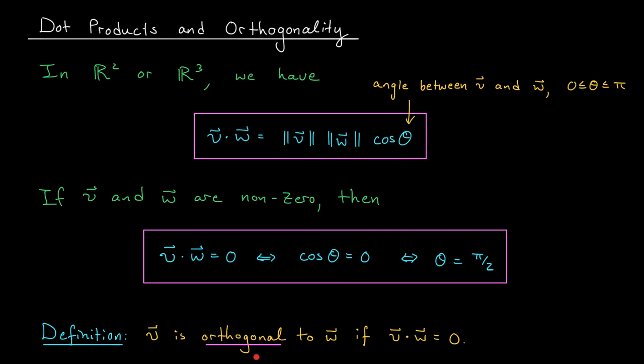Mathematicians actually often like to use the word orthogonal. So here's our definition. We say that two vectors V and W are orthogonal if their dot product is equal to 0. Now let's check out an example.